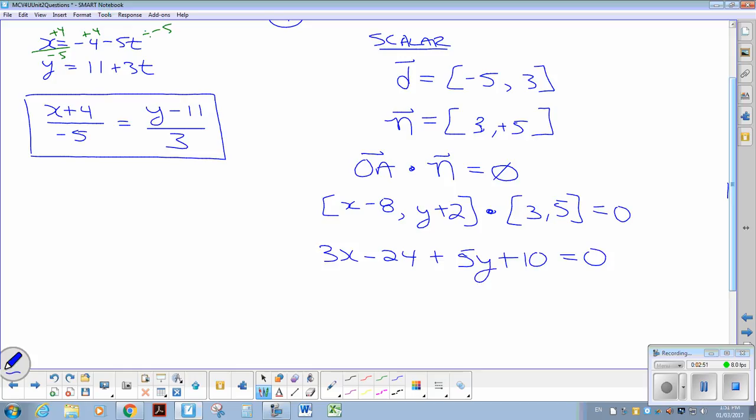equals 0. Collecting up your like terms, we get 3x plus 5y minus 14, equals 0. And there's our scalar equation for this situation. All right, so there's your symmetric and your scalar equation. If you have any questions, let me know, and I'll see if I can clarify them.